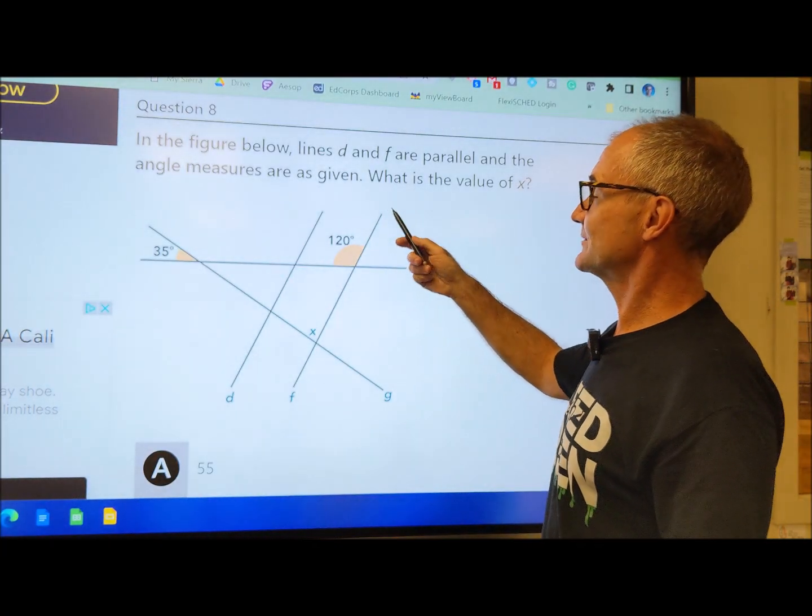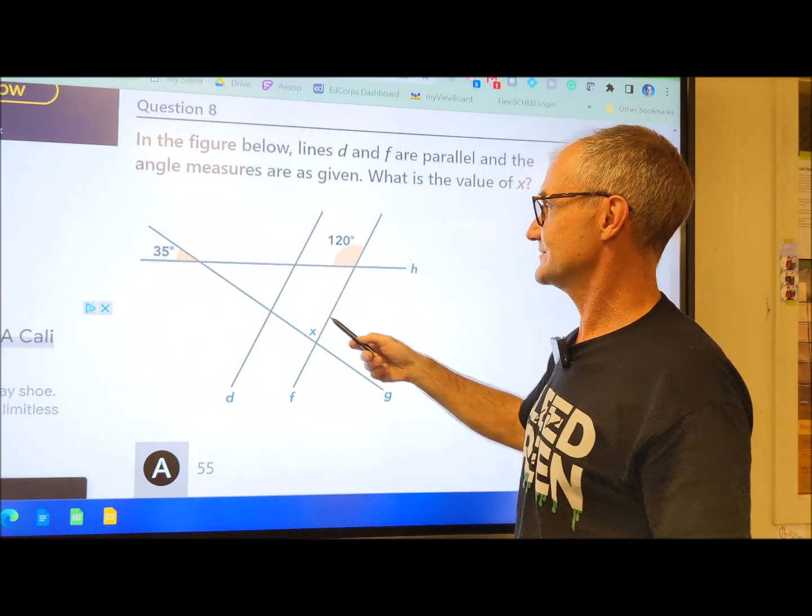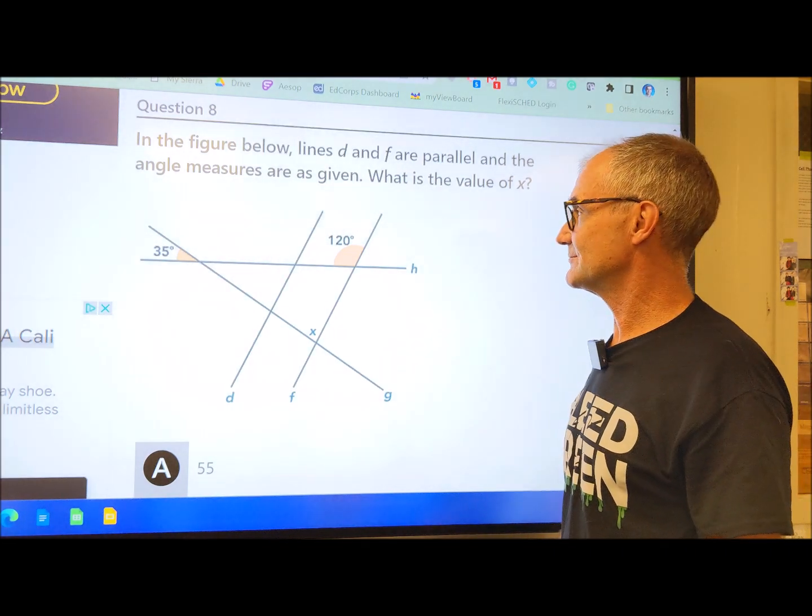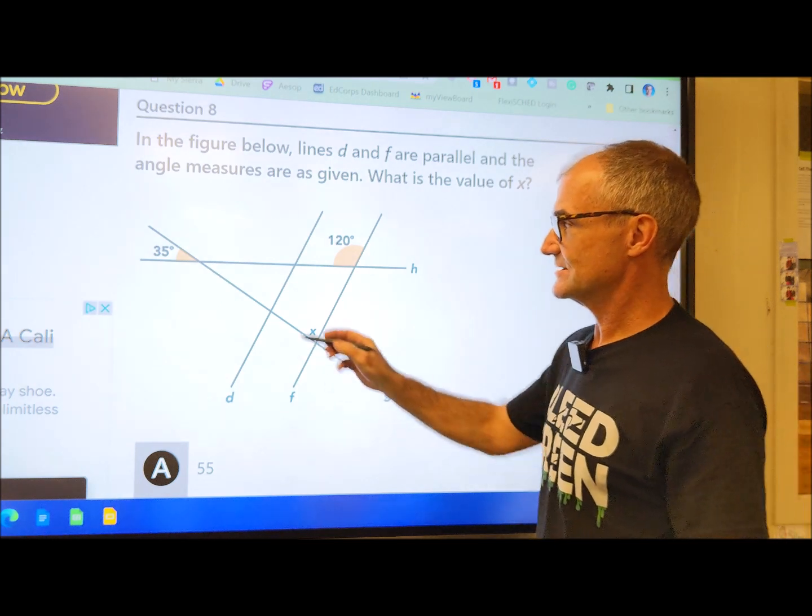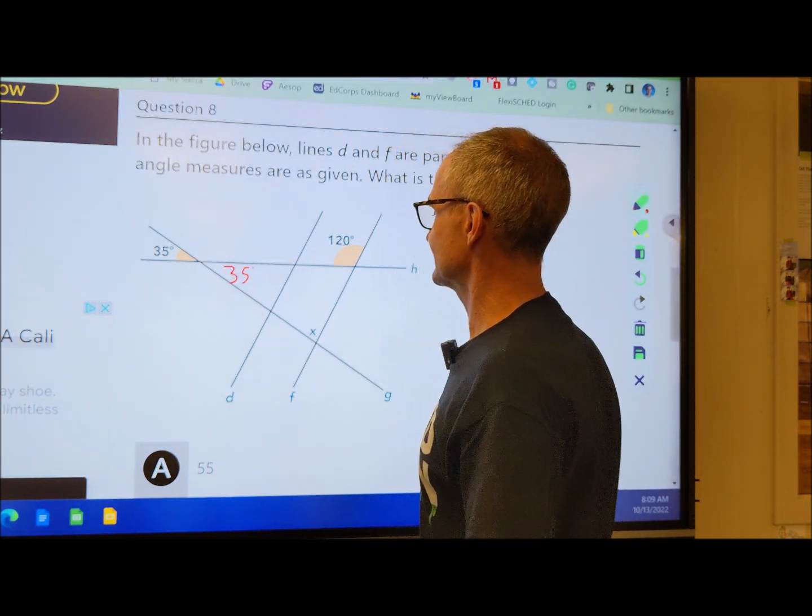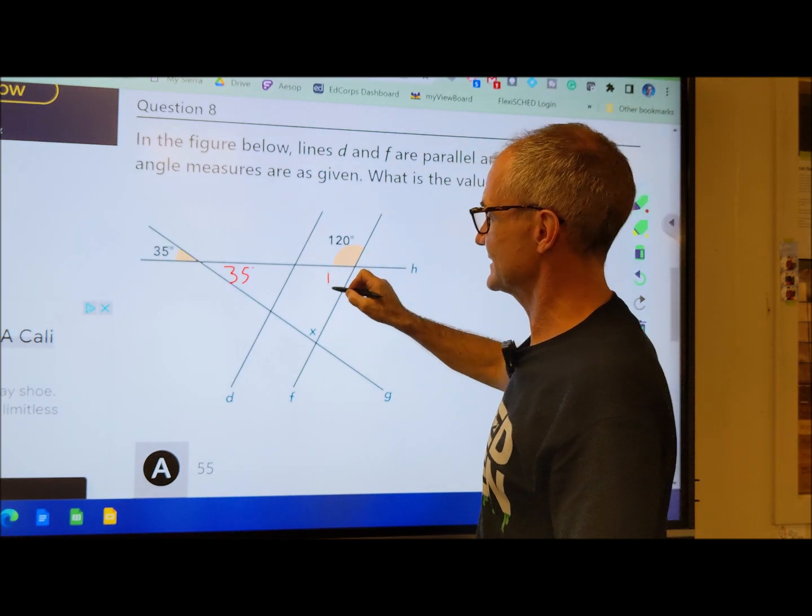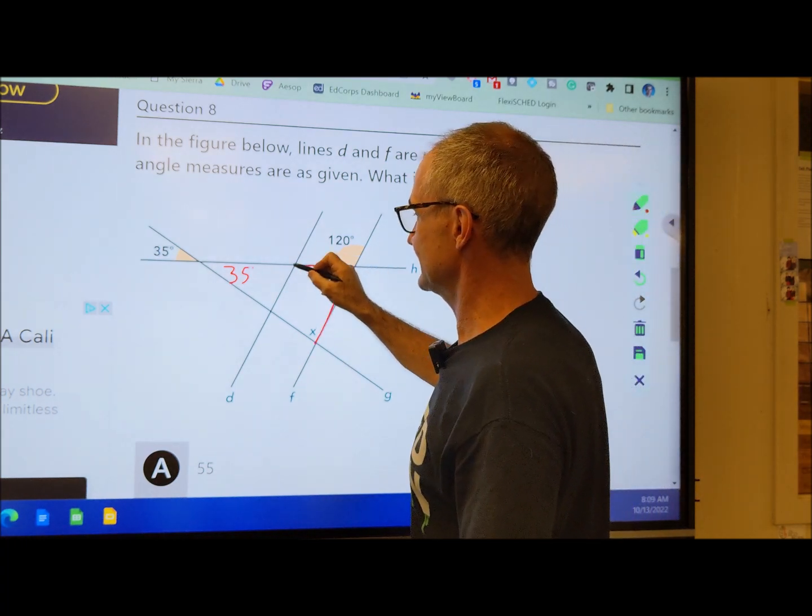Problem number 8, in the figure below, lines D and F are parallel and they're cut by this transversal and you're given those angles, trying to find the measure of angle X. It's kind of a hard problem. Probably just starting to write in whatever you can figure out. So if that's 35 degrees, this is 35 degrees vertical angles. If this is 120, this is its supplement at 60. Now that I have that, I can actually see a triangle right here and I have two angles in a triangle.